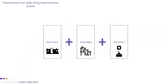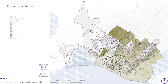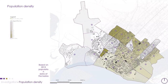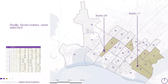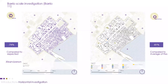After investigation, we selected an intervention area for detailed study using three parameters: roof structure, overcrowding, and poor services. We identified the existing roof structure across the city as good condition, partly rusted, or rusted. We studied population density for each barrio as high, medium, or low density. Based on this, we selected barrios 9 and 11. However, for this presentation we focus only on barrio 11, and this is the barrio-scale investigation.